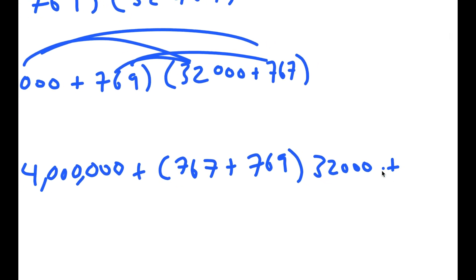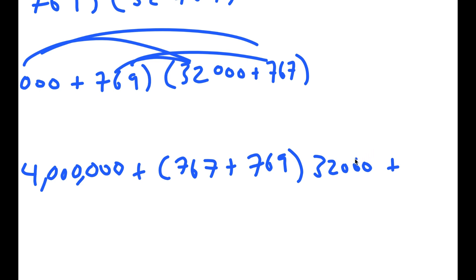And finally, I have, at the end, 767 times 769, which is equal to 589,823.